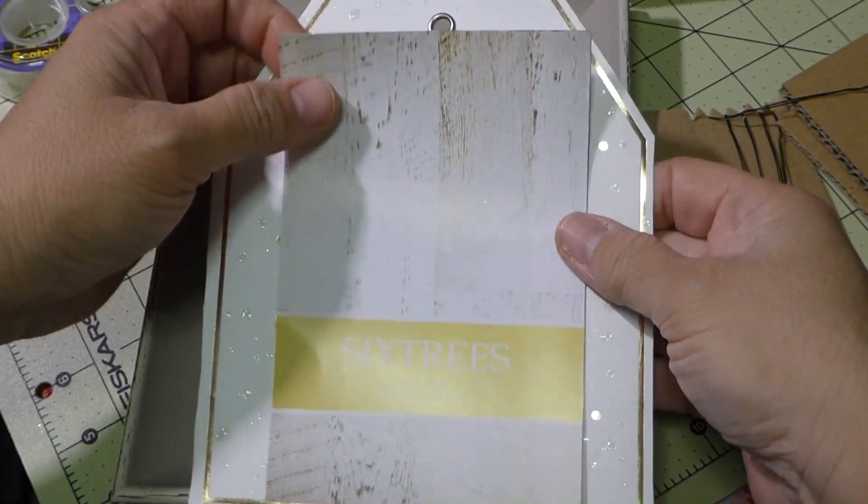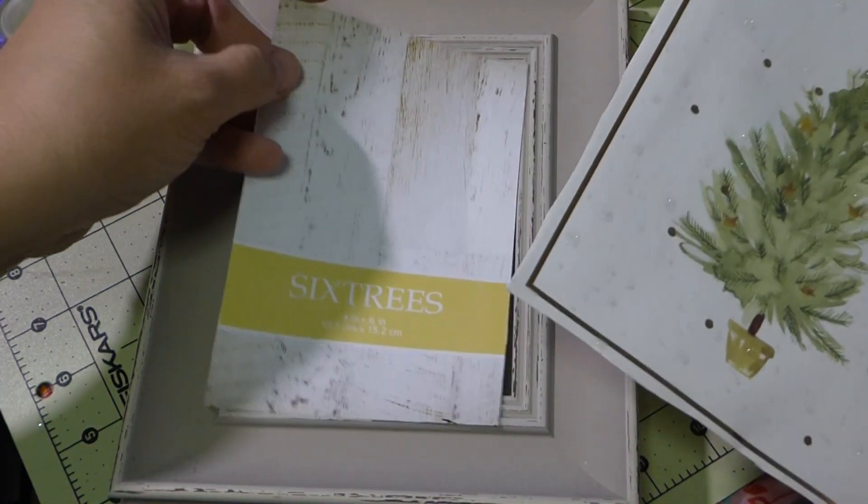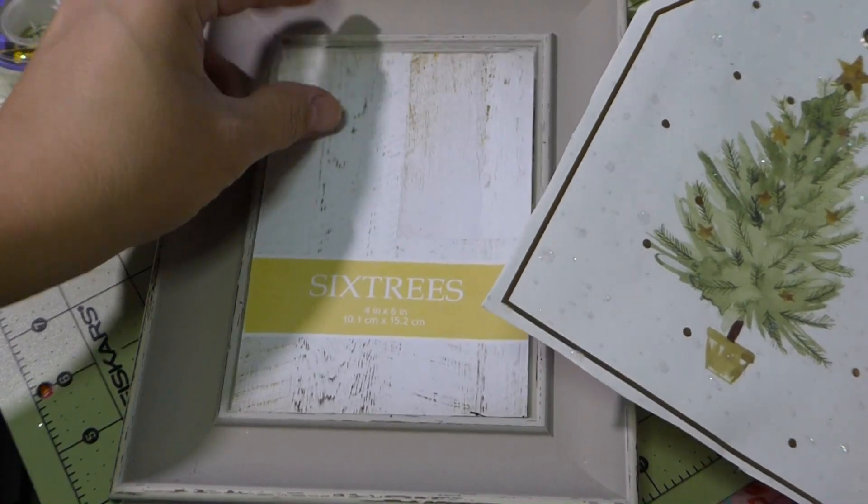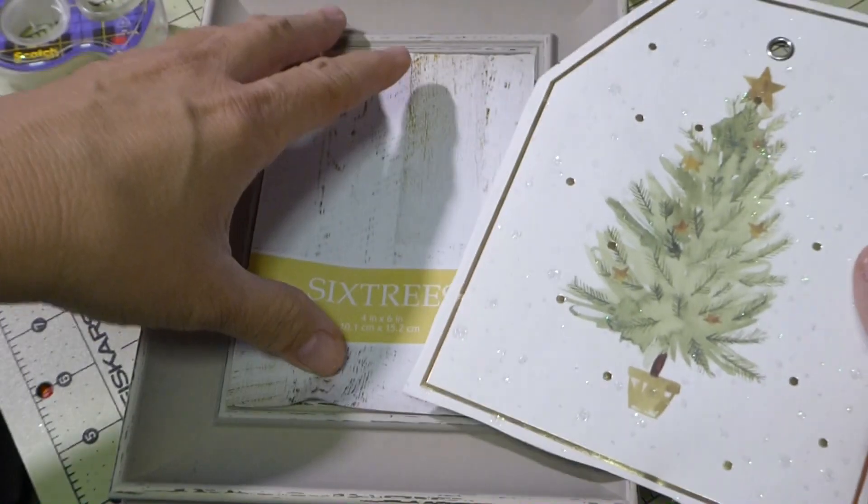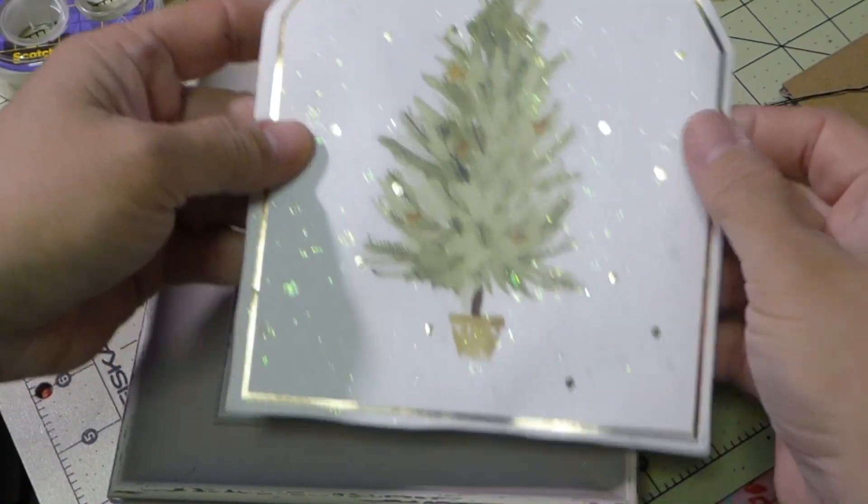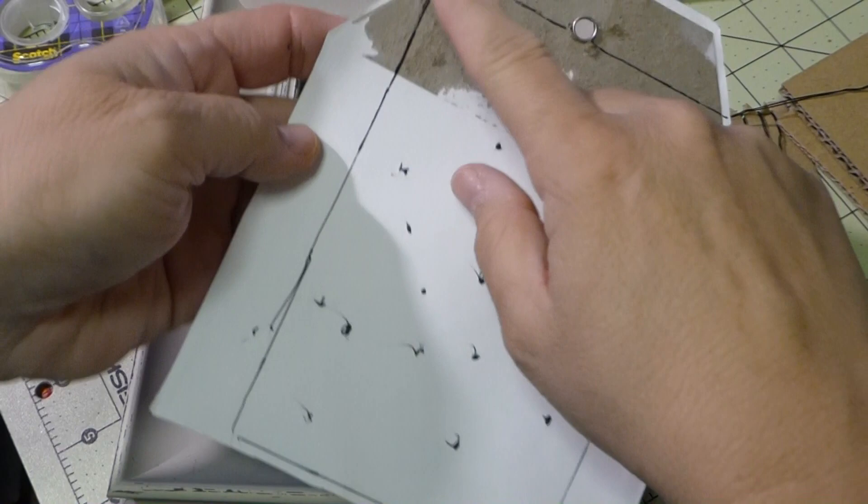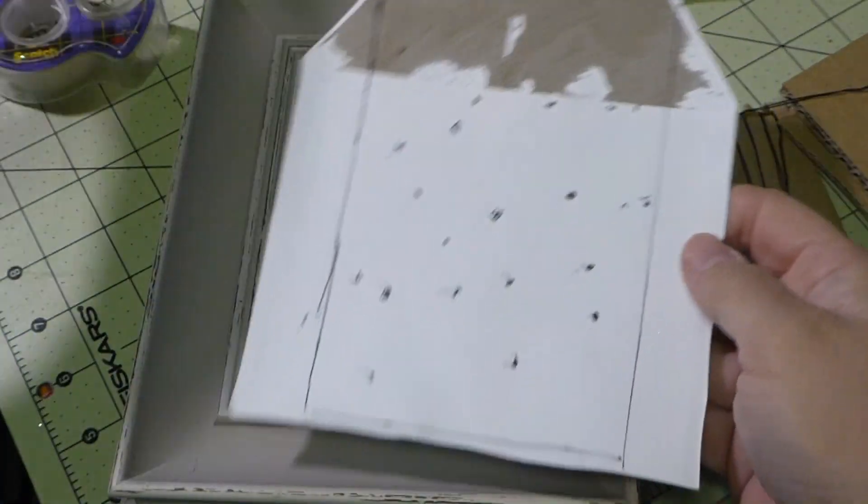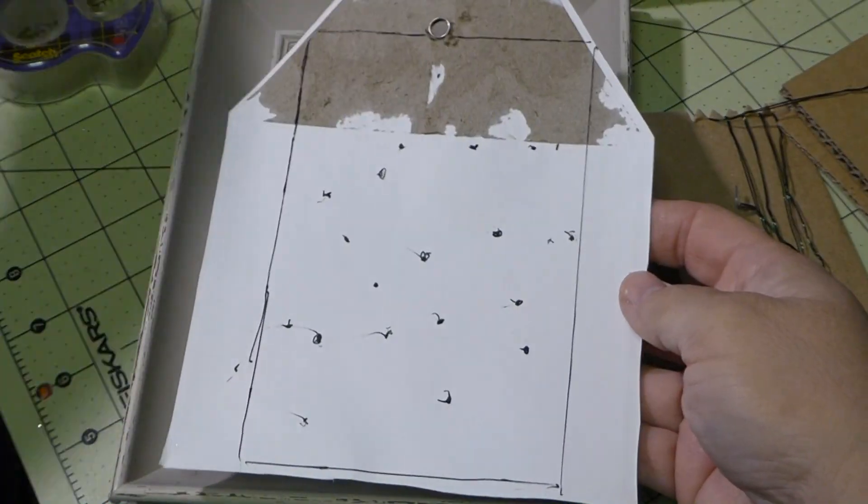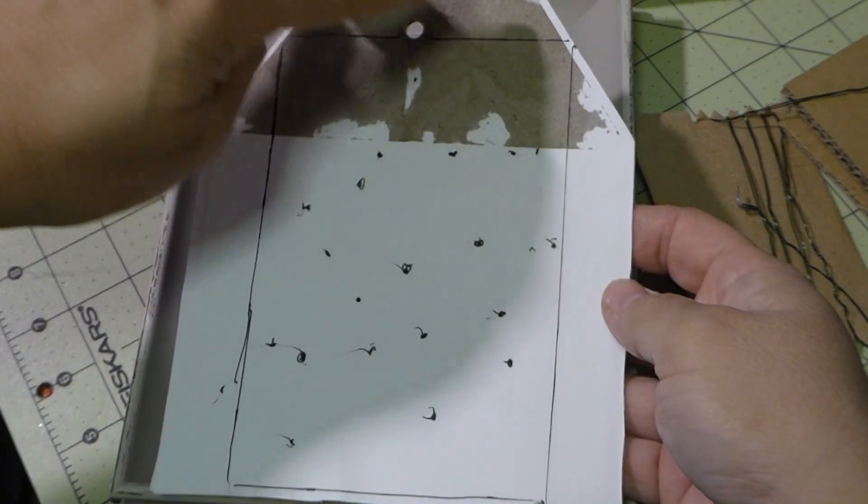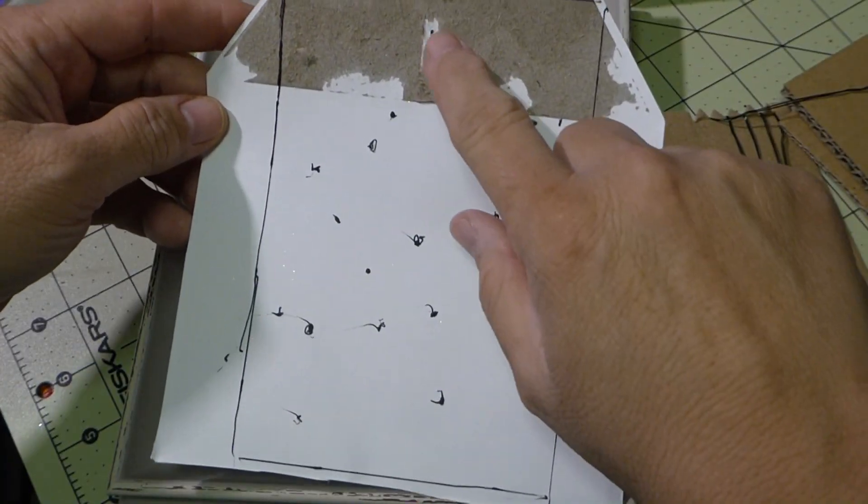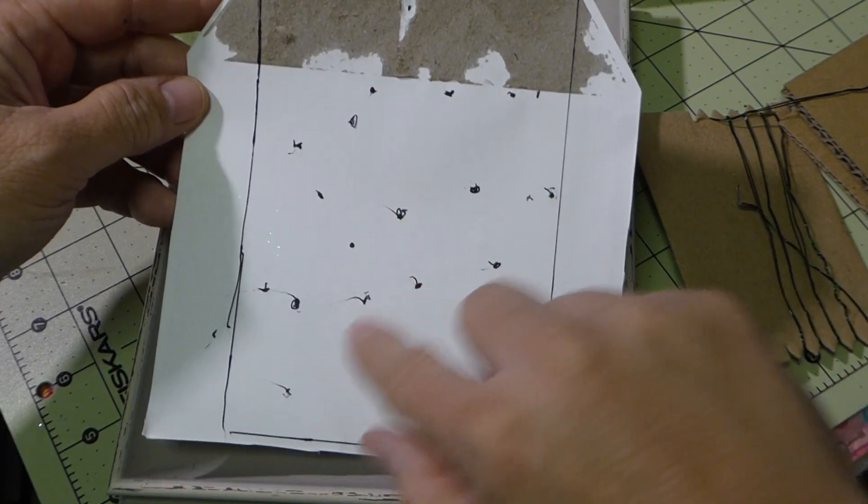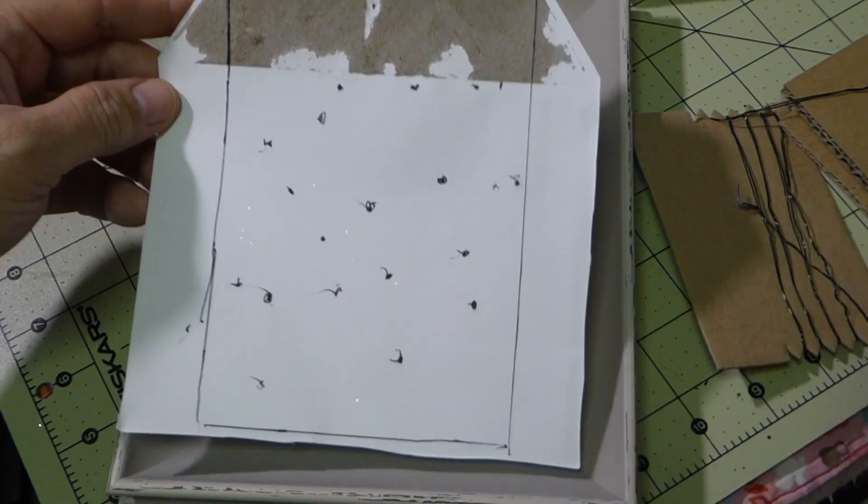What I did was I took this, which is inside of here, and just a little bit on the outsides will not be seen while in there. Then I drew using that template where I'm going to be cutting, and I also held it up to the light and put dots where I would like my lights to be.